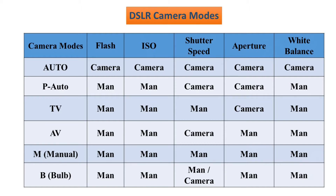In the bulb mode, you can click and hold the shutter button. For example, if you have an idea for a long exposure, you can use the bulb mode. This is excellent for night photography, as the bulb mode is used specifically in night conditions.